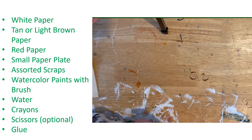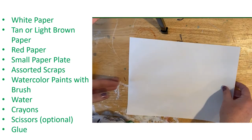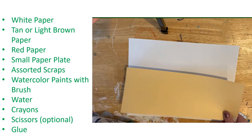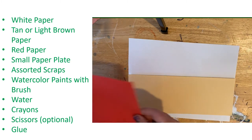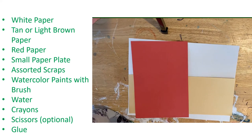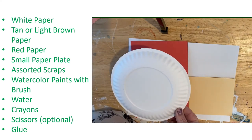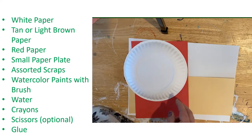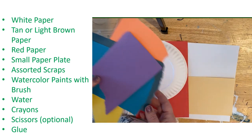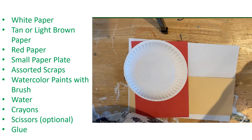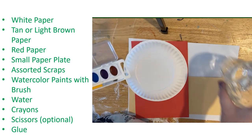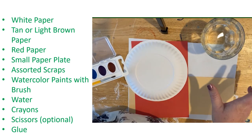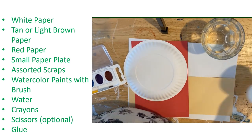For today's project you will need a plain white piece of paper, a half sheet of tan or light brown paper, a half sheet of red paper, a small paper plate, and some assorted scraps in assorted colors. You will also need a watercolor set — make sure you have the brush — some water for your watercolors, and some crayons.